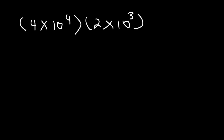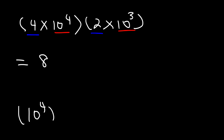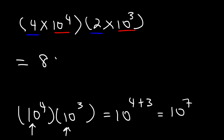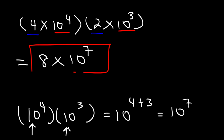The first thing we need to do is multiply the numbers 4 and 2. 4 times 2 is equal to 8. Next we can focus on 10 to the 4 times 10 to the 3. Since the bases are the same we are allowed to add the exponents. So this is equal to 10 raised to the 4 plus 3, which is 10 to the 7. So the answer is 8 times 10 to the 7, and that's a simple way to multiply two numbers in scientific notation.